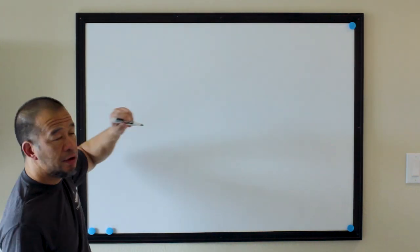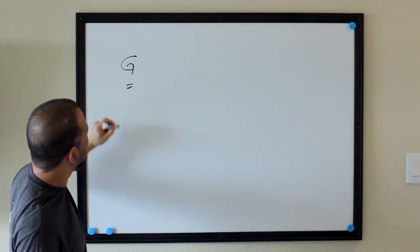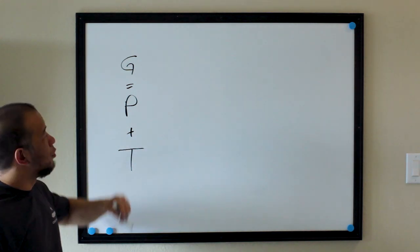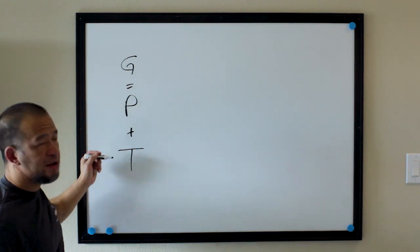Basically it comes down to what we have here: G equals P plus T, where G is our game, P is our physicality, and T is our technique.